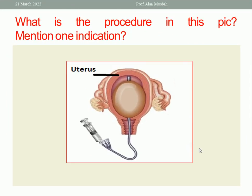Let us go to the next. What is the procedure in this picture? This is the uterus, and this is an intrauterine balloon tamponade — inflated inside the uterus. So the procedure here is intrauterine balloon tamponade. The indication: in cases of postpartum hemorrhage, one of the methods to control bleeding is to use an intrauterine balloon tamponade. It is used in cases of postpartum hemorrhage to control the bleeding.